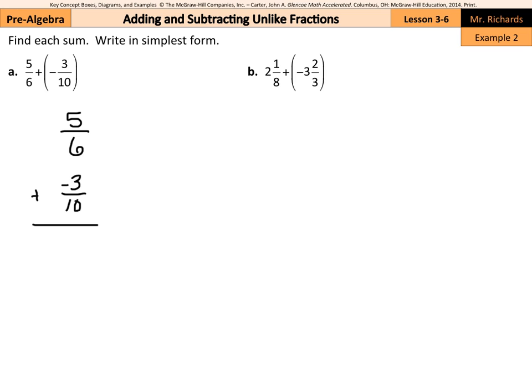Now, the lowest common denominator, the more you do these, the easier they will become, truly. Our lowest common denominator, if you think of the multiples of 6 and the multiples of 10, is 30. And so then we ask ourselves, 6 times what is 30? Well, 5.